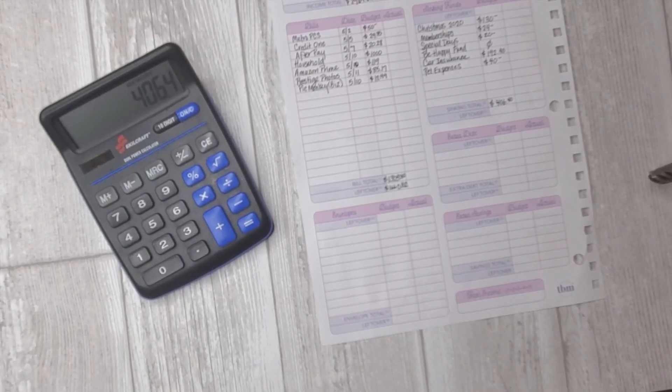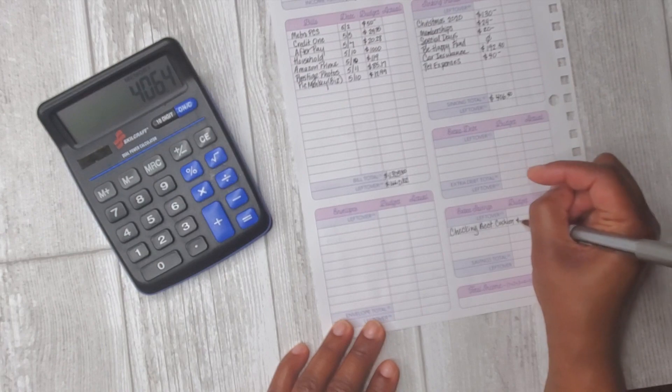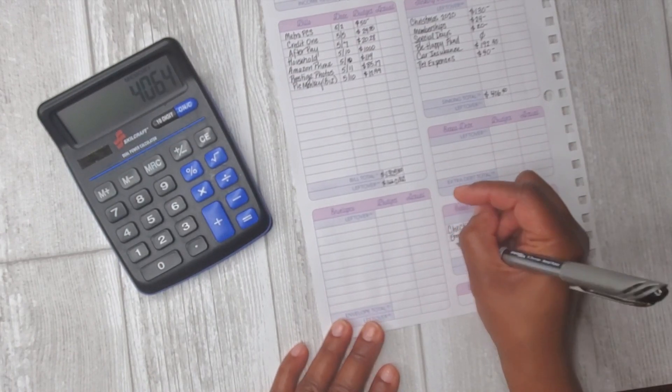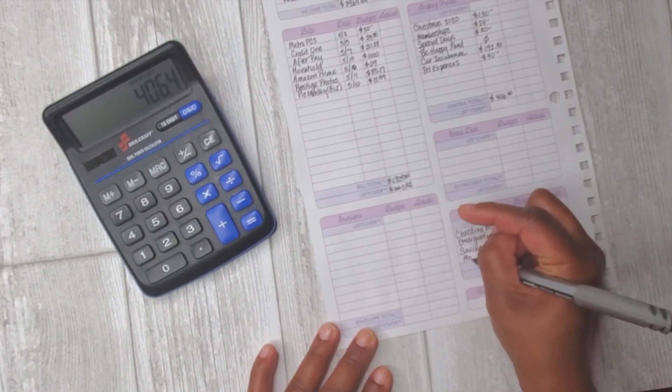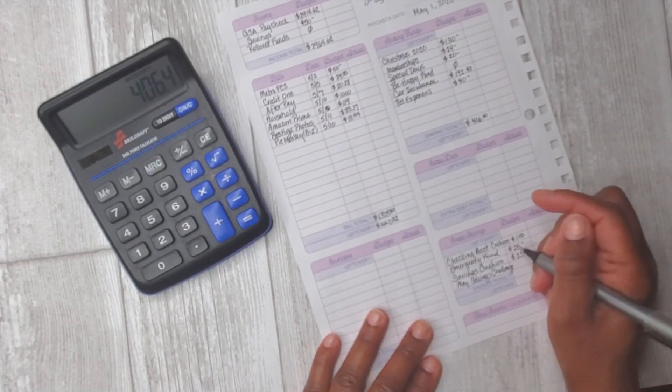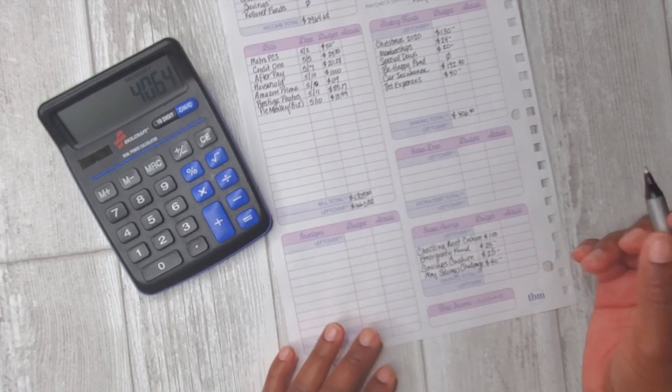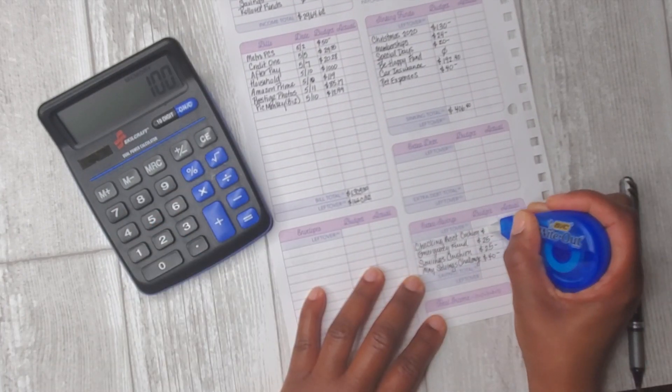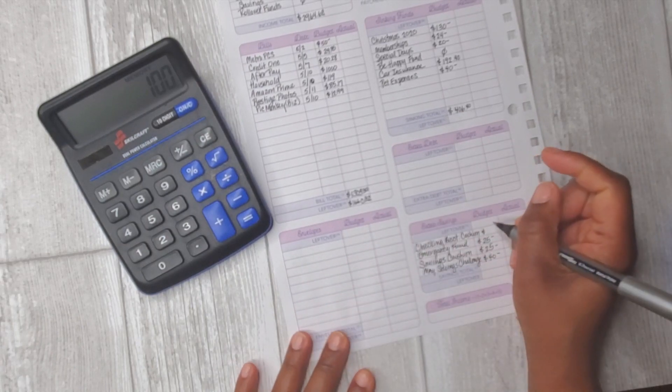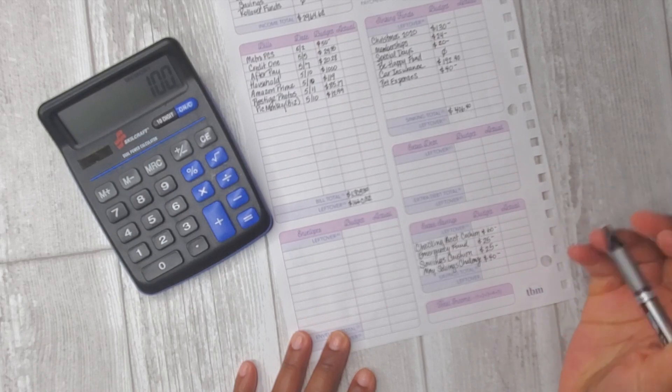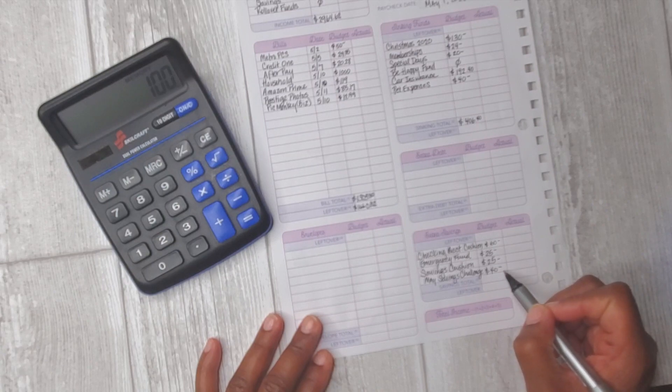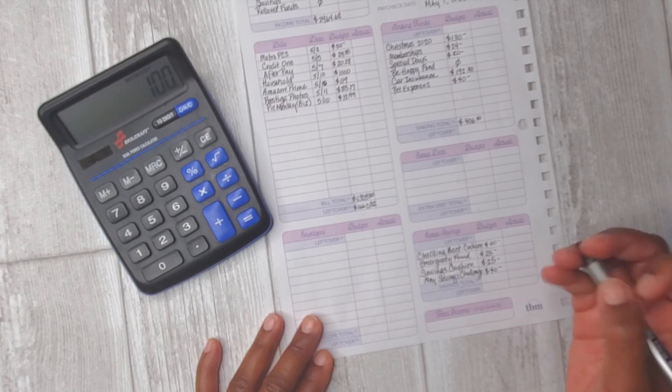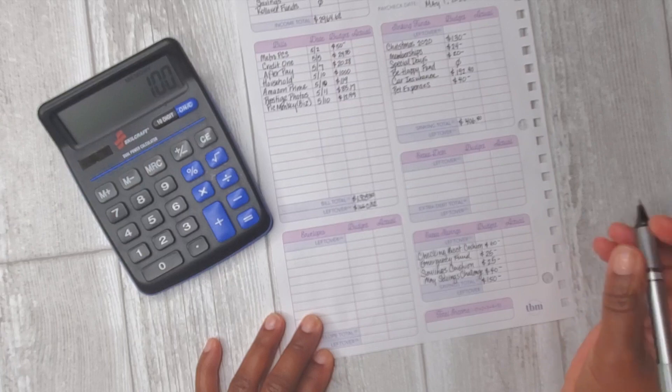In terms of savings, I know that I've been putting $100 towards emergency fund and savings cushion, $25 for each of those. I want to check on my May savings challenges. Let me set aside $40 for that. I'm going to adjust this because I actually want to just reduce that checking account cushion. I'm going to put $60 there, $40 towards my May savings challenge, and then my emergency fund and my savings cushion $25 each, which gives me a total of savings $150.